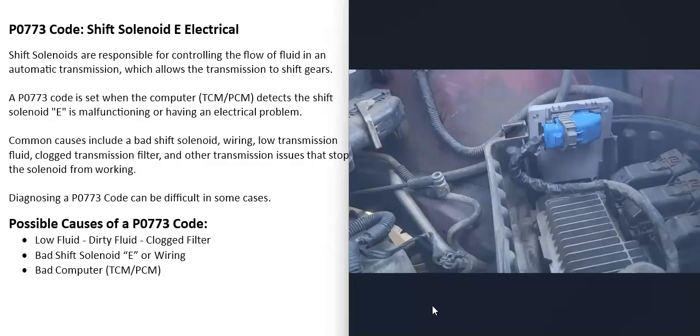The last thing is going to be a bad computer, like a bad transmission control module or a bad powertrain control module. Usually when a computer goes bad, you're going to be getting a lot of other codes. When a computer goes bad, it usually doesn't just give you one code. So if you're getting a lot of other codes, there might be some kind of issue going on there or with the connections going to the computer.